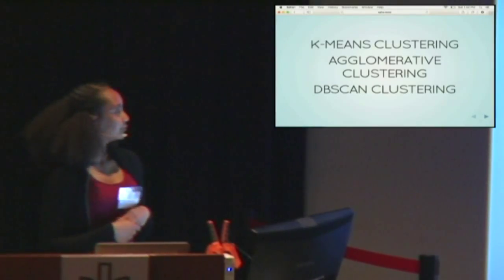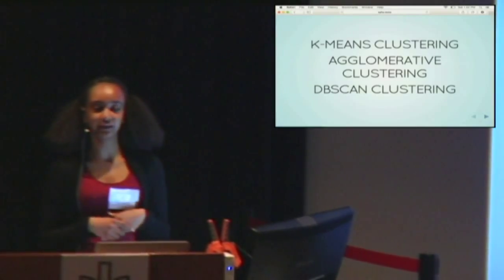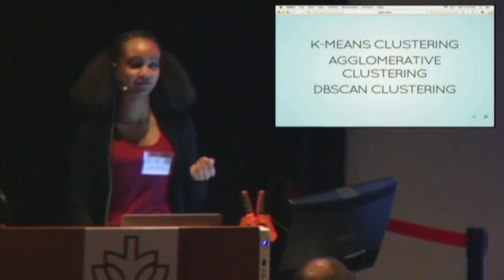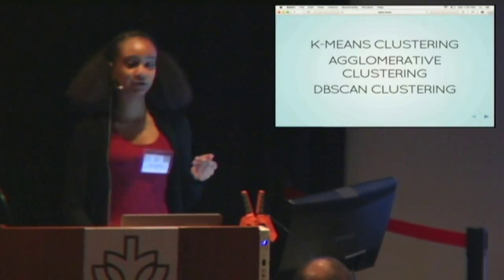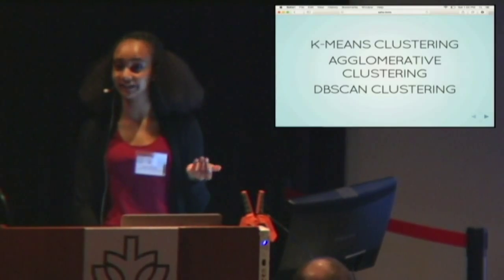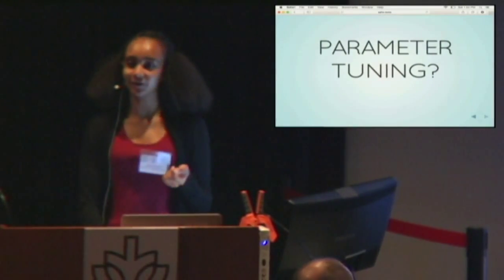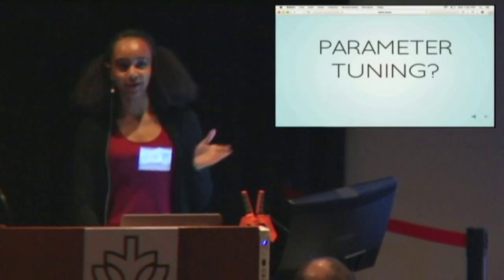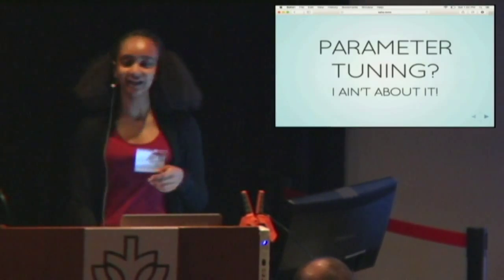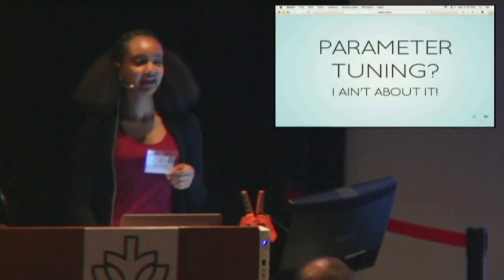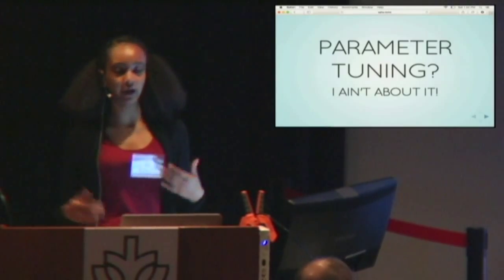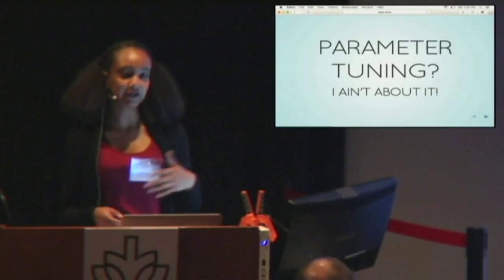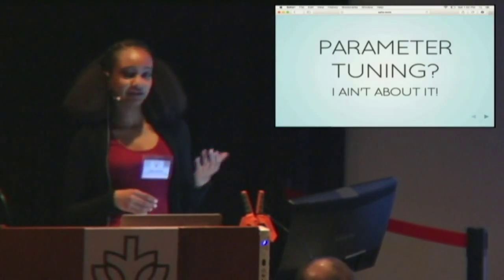I hadn't played around with DBSCAN before, and it was interesting to work with. One thing about DBSCAN is there's a parameter called the epsilon value that specifies the maximum distance between two points for them to be considered in the same cluster. I was not about parameter tuning, so I set out and did some Googling to figure out if there was a newer version or improvement on DBSCAN that would help me out.